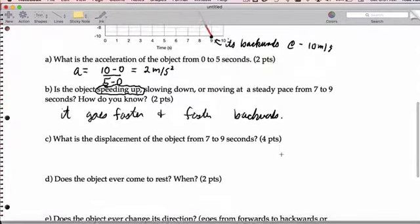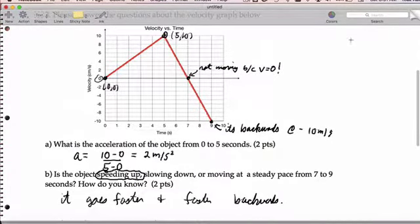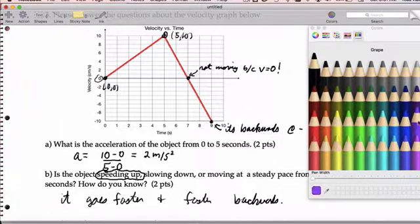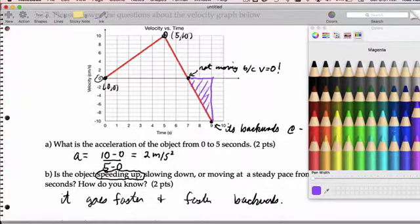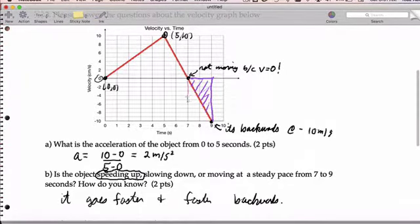All right. Now we want the displacement of the object from 7 to 9 seconds. Okay, I'm going to be very specific on how I want to see this work. You begin at the axis. So we're going to go from 7 to 9 seconds. And then we fill in this area here. That's the area we need to calculate. I'm just going to say something very, very clearly.